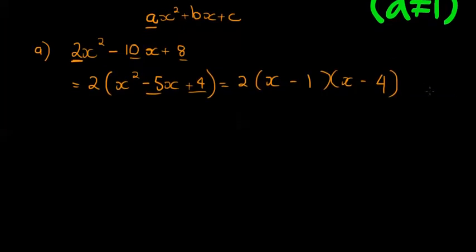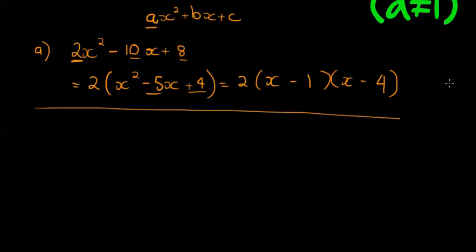Please keep this in consideration: the first thing to always do when factorizing is find out if there's a common factor. That's the very first thing we do. Now let's assume there is no common factor.